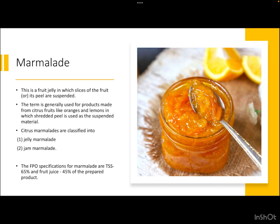Marmalade — just like jam and jelly, marmalade to a large extent resembles both these products. The only difference is that it has some shredded pulp, pieces, or chunks of fruit added in it. One can say it is a fruit jelly or jam in which slices of the fruit or its peels are suspended. The term is generally used for products made from citrus fruits such as oranges, musambis, lemons, and pomelo, where shredded peel is used as the suspended material. Citrus marmalades can be classified into two products: jelly marmalade and jam marmalade.